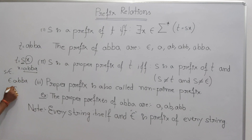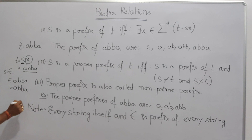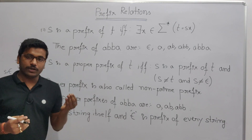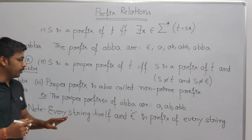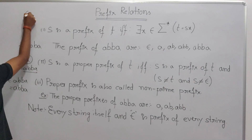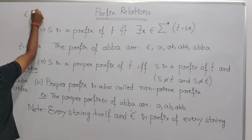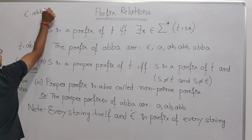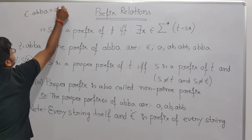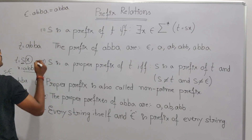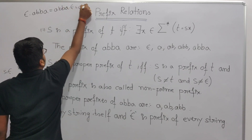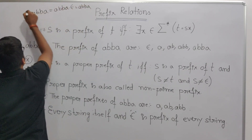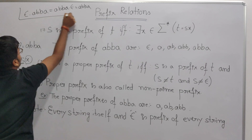Because when you concatenate epsilon with abba you always get abba. So whenever we concatenate anything with epsilon we get that same string. Epsilon·abba gives abba, and abba·epsilon also gives abba. So this is the same.